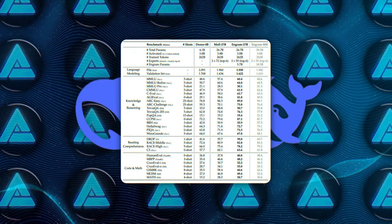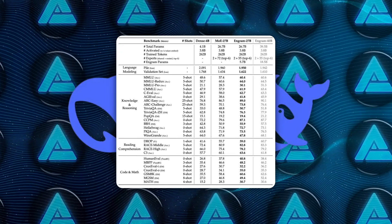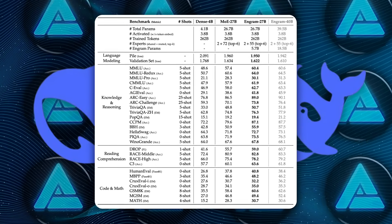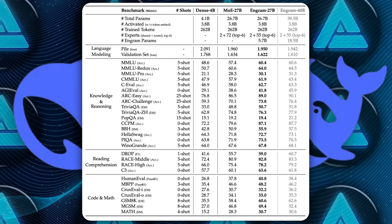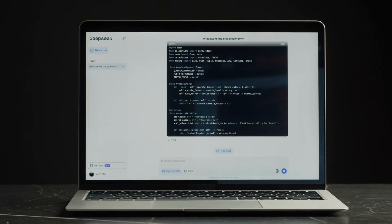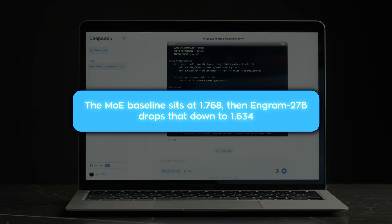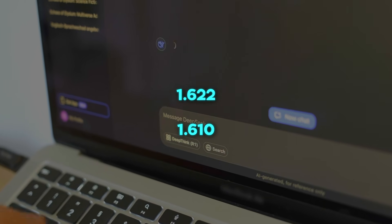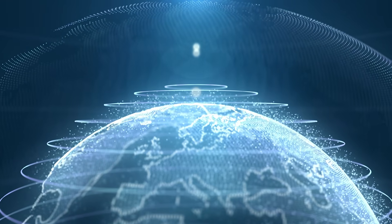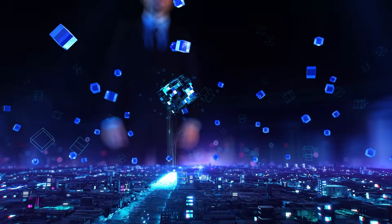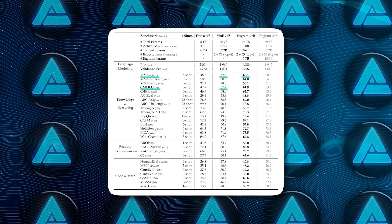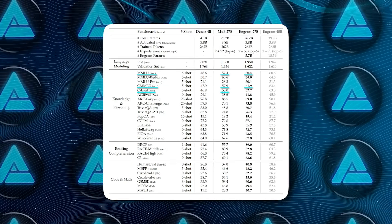Across the board. On a major benchmark dataset called the pile, the MoE model gets a loss score of 2.091. N-gram 27B drops to 1.960. Then n-gram variants push 1.950. Then n-gram 40B gets 1.942. Internal validation loss also drops a lot too. The MoE baseline sits at 1.768. Then n-gram 27B drops that down to 1.634. And even the n-gram variants keep pushing it further, down to 1.622 and 1.610. And then the benchmark scores go up in a way that honestly surprised them. Because sure, memory should help on knowledge tasks, right? Trivia, facts, all that. And yeah, it does. MMLU goes from 57.4 to 60.4. Chinese MMLU jumps from 57.9 to 61.9. C-EVAL goes from 58.0 to 62.7.